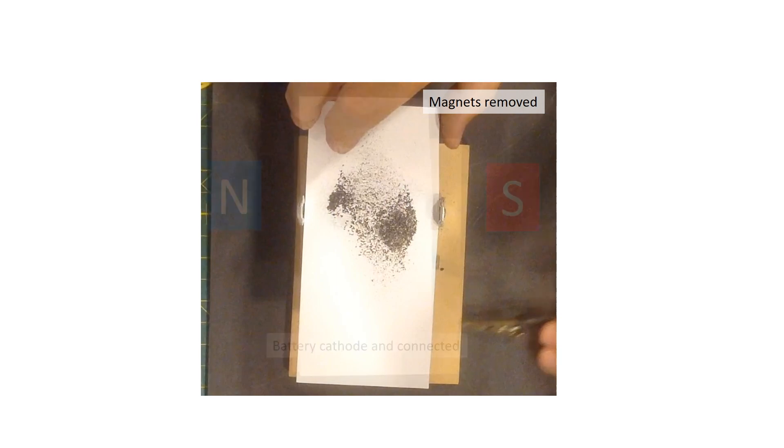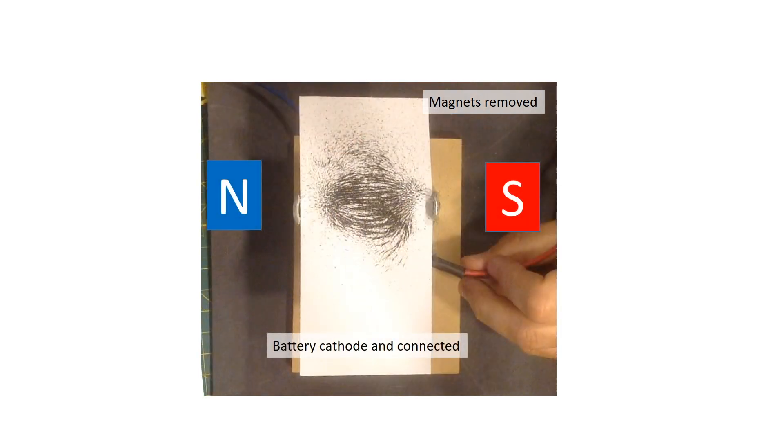However, if I attach my leads to the brushes, now a magnetic field is generated by the current flowing through the wire that makes up the rotor.